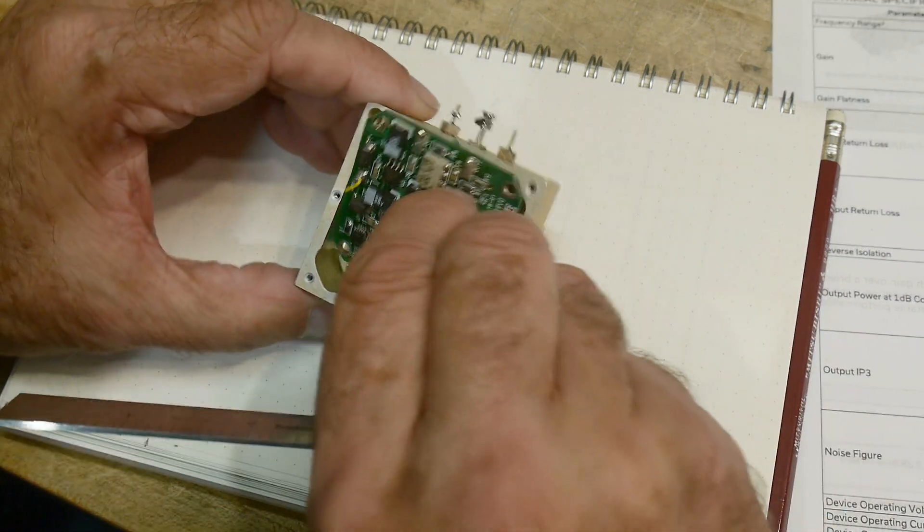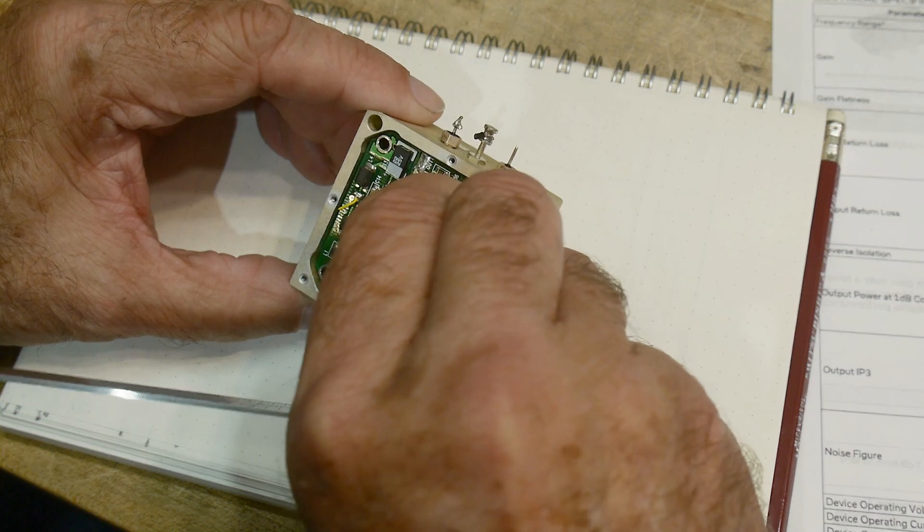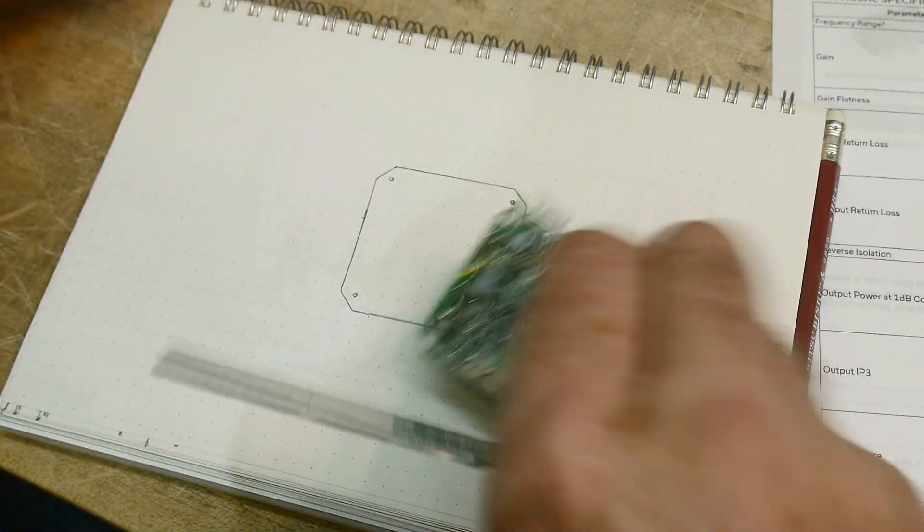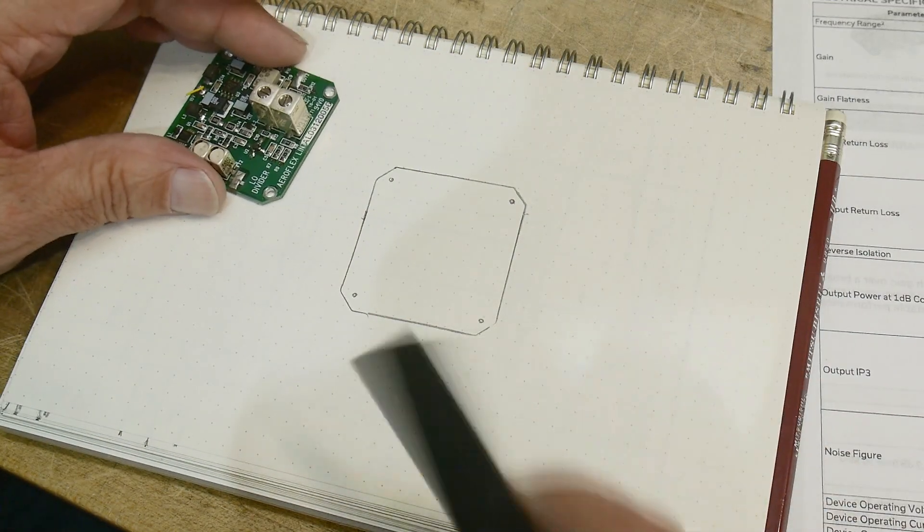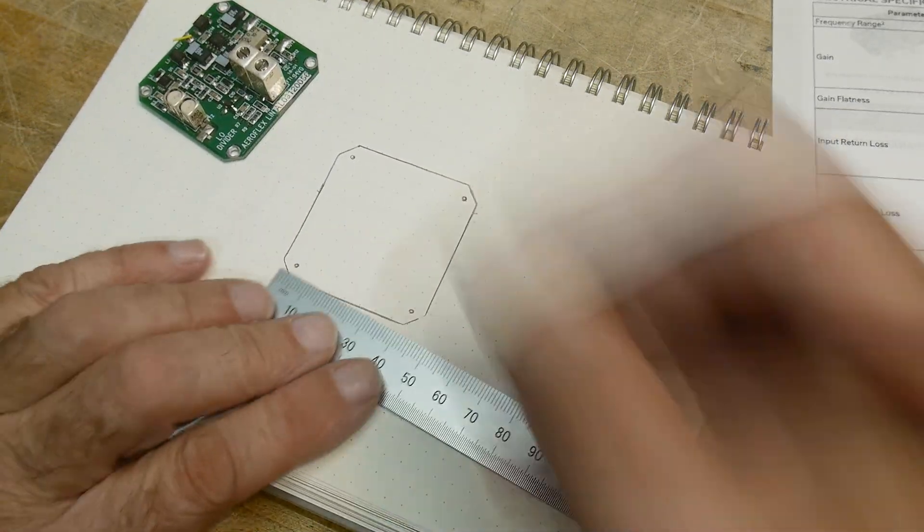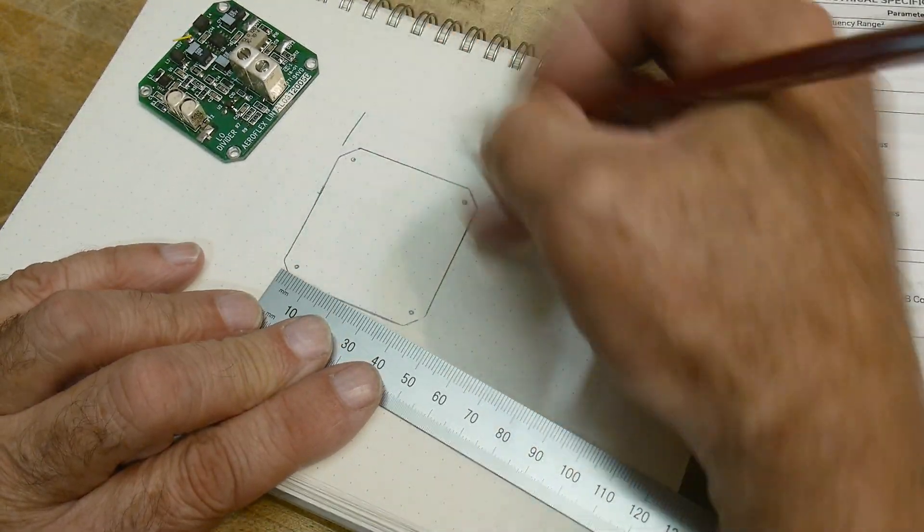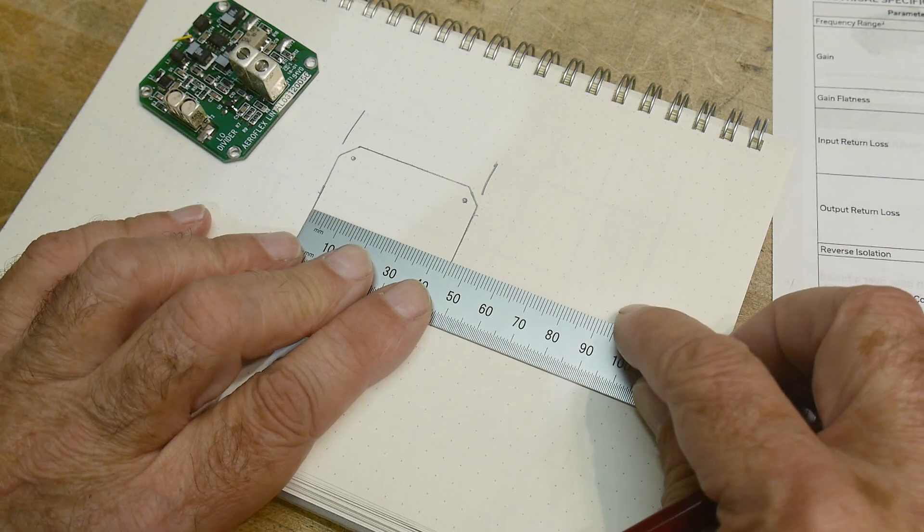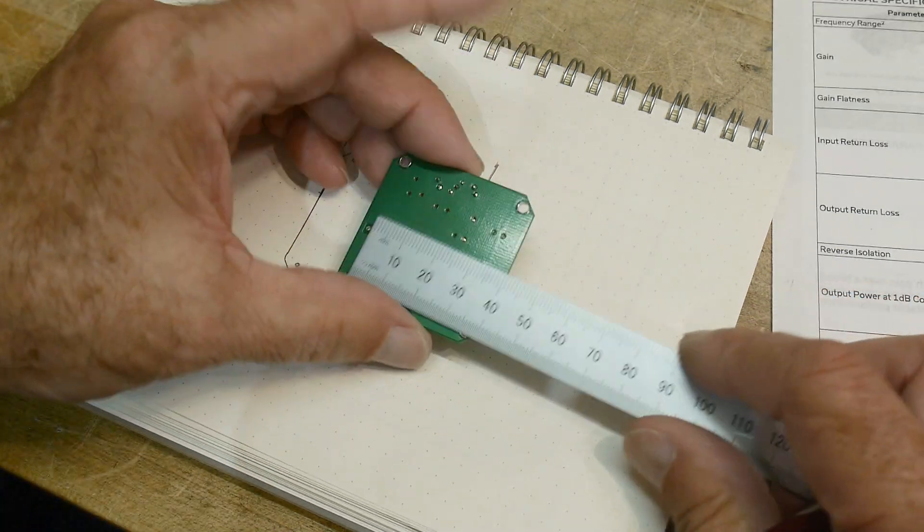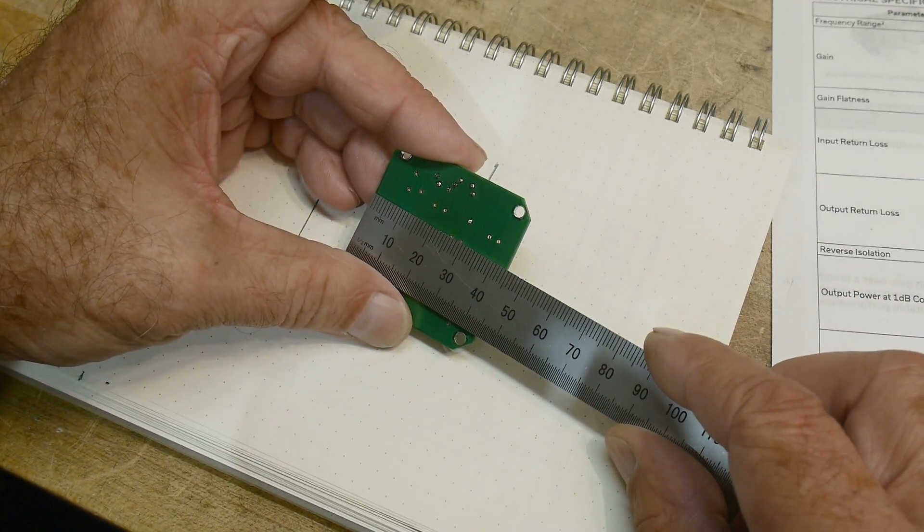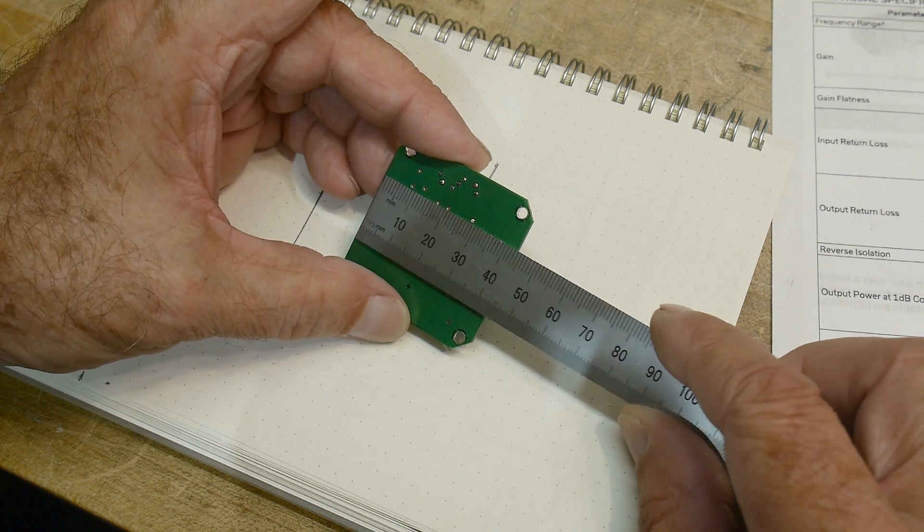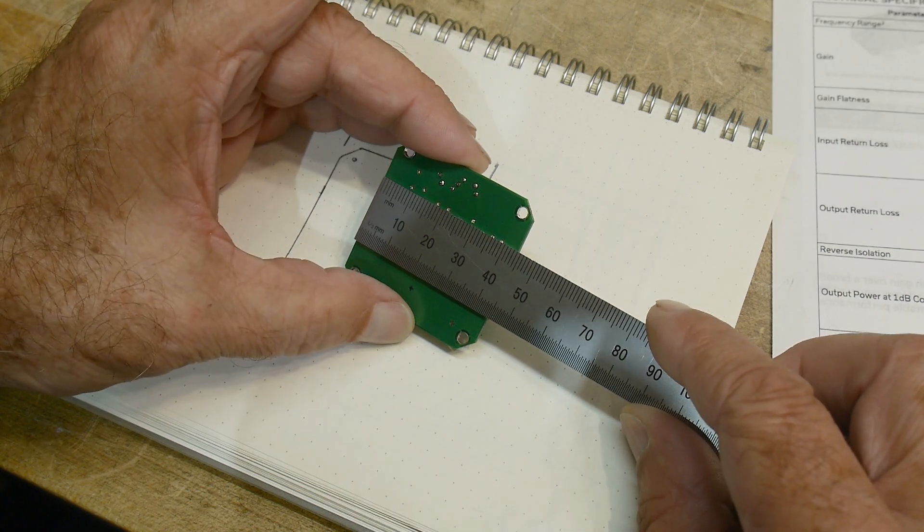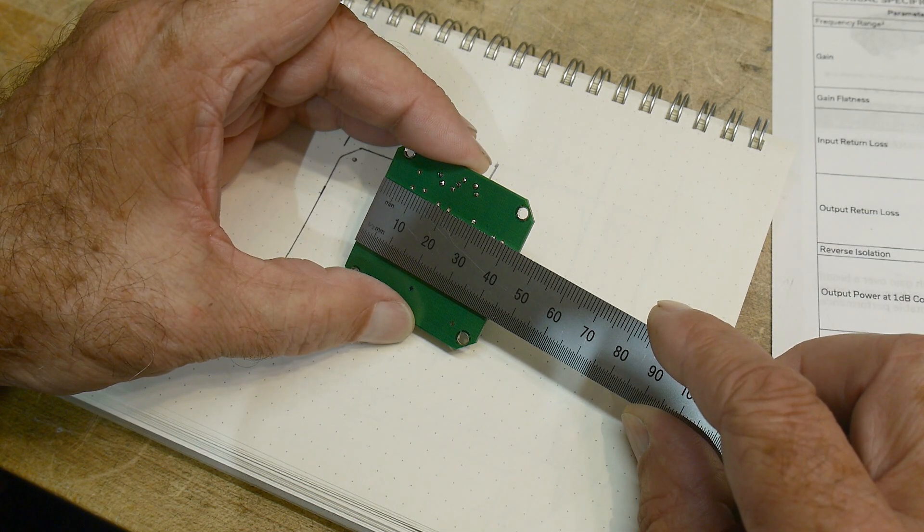And how much wiggle room do we have here? That's pretty tight. Maybe half a millimeter around, something like that. But yeah, so we will draw some dimensions here. The board is... it looks like 43.